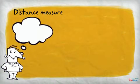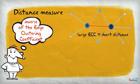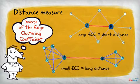We define the distance measure as the inverse of the edge clustering coefficient. This coefficient is large when two nodes connected have many common neighbors. For detecting communities, larger clustering coefficient will indicate smaller distance.